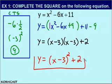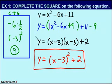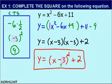Now we have successfully completed the square on this equation. I'd like to bring something to your attention. In our completing the square process, we get a negative 3 before we square it. Notice what else we have in our parentheses — we also have an x minus 3. Coincidence? We'll see.